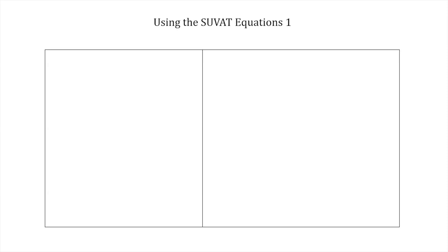In this video we're going to look at the SUVAT equations. We're going to introduce the five variables involved: S, U, V, A, and T — hence the name. Then we're going to look at a few examples of SUVAT equations.